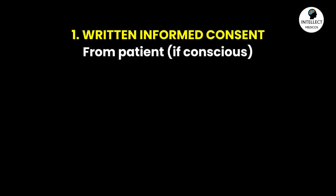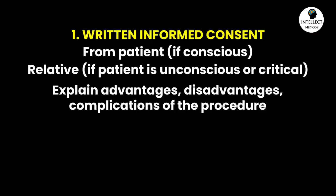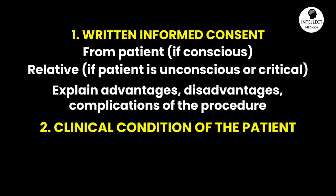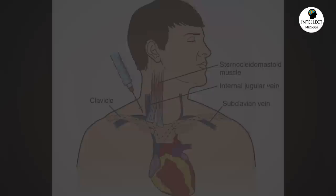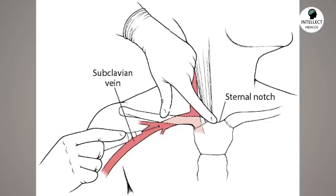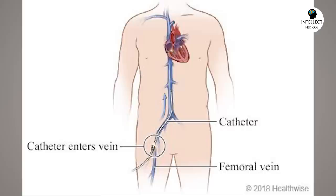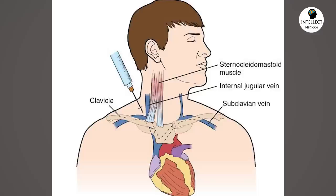Before proceeding with the technique, we need written informed consent — either from the patient if conscious, or from the relative — after explaining all the advantages, disadvantages, and complications. You also need to check the patient's vitals, clinical status, coagulation profile, platelet count, and INR. There are three routes for central venous catheter insertion: first, IJV — internal jugular vein; second, from the subclavian vein; and third, from the femoral. This video demonstrates central venous catheter insertion through the internal jugular vein using bedside ultrasound.